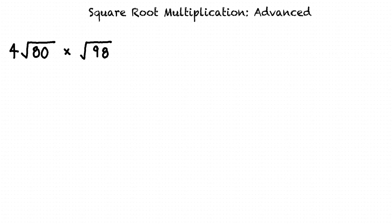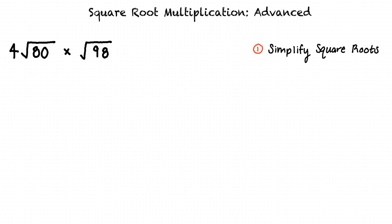What do you think is our first step towards simplifying this expression? We could start by multiplying the two expressions together, but I would recommend that we begin by first simplifying each square root expression, as multiplying first may lead to a large radical that is difficult to simplify. So we'll simplify the square root expressions first.